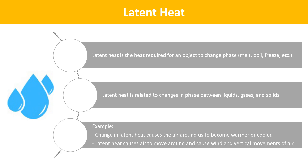The next term is Latent Heat. Latent heat is the heat required for an object to change phase — melt, boil, freeze, etc. Latent heat is related to changes in phase between liquids, gases, and solids. Change in latent heat causes the air around us to become warmer or cooler. Latent heat causes air to move around and causes wind and vertical movements of air.